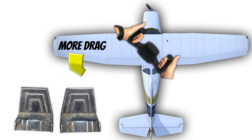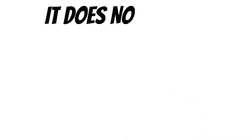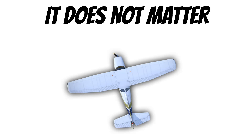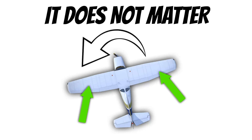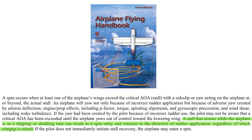Rolling the airplane will actually cause it to yaw in the direction of the lowered aileron. This is why it does not matter which wing stalls first, or even if both wings stall at the same time — if your airplane spins, it's going to spin in the direction of the yaw. As the Airplane Flying Handbook states: 'A stall that occurs while the airplane is in a slipping or skidding turn can result in a spin entry and rotation in the direction of the rudder application, regardless of which wing tip is raised. If the pilot does not immediately initiate stall recovery, the airplane may enter a spin.'